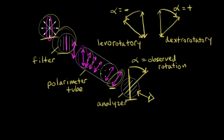The observed rotation alpha depends on the number of molecules that are hit by our polarized light. If we increase the concentration, our light is going to rotate even more — it runs into more molecules and exits our tube at a different angle. If you double the concentration, you double the observed rotation. You can also change the observed rotation by changing the path length — the length of this tube, L — and if you double the path length while holding concentration constant, you double the observed rotation.